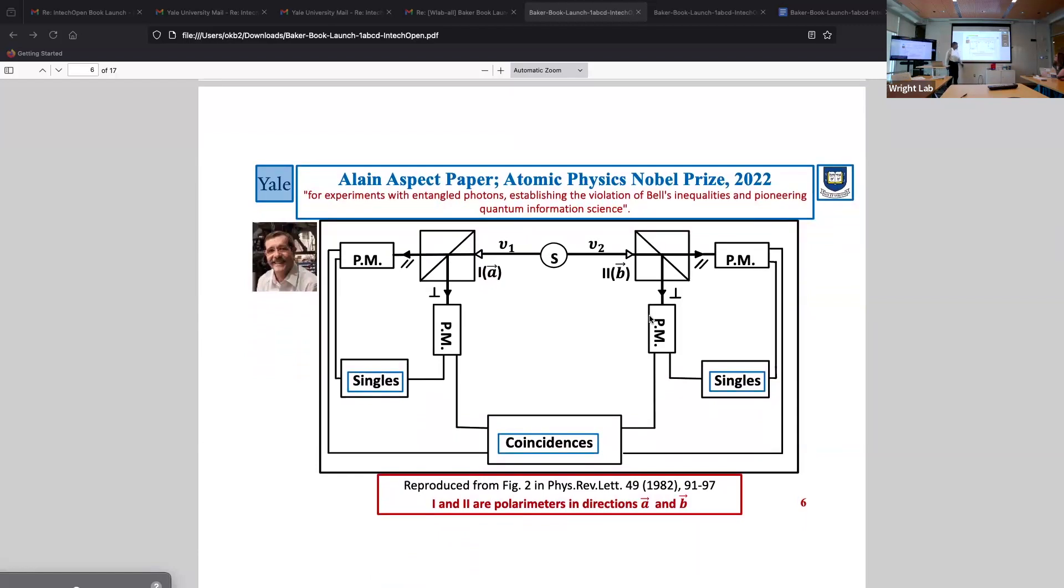This is a paper that was published in the literature of letters by Alan Aspect, and you probably already know that he won the Nobel Prize. He and his couple were awarded the Nobel Prize in 2022 on this very experiment. They had, this is the source, and in this source, you had an atom that decayed into photons. The photons, these slits made them go along a certain path, directly along a certain path.